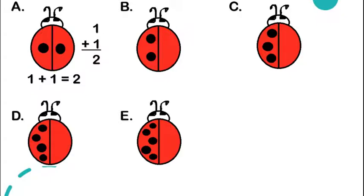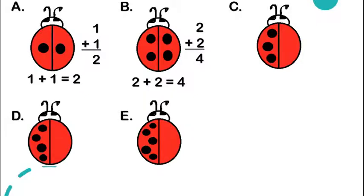Time is up, so let's check your answers. In letter B, there are two spots, so we need to draw two spots also on the other wing, and we get the addition sentence two plus two is equal to four. For letter C, we have three spots, so we need to draw three spots also on the other wing, giving us three plus three is equal to six.